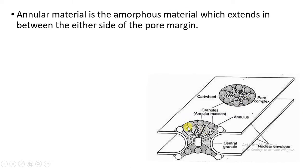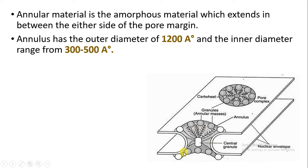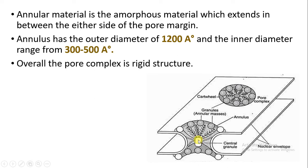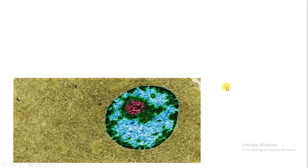The annular material is amorphous, meaning it is able to absorb fluid content, so it can extend on either the outer side or the inner side. The annular material is present at the margin of the pores. The annulus has an outer diameter of about 1200 angstrom and an inner diameter of about 300 to 500 angstrom. Overall, the structure is kind of a rigid structure.